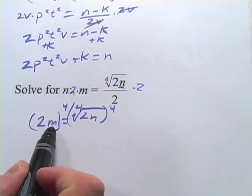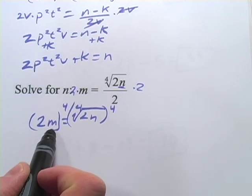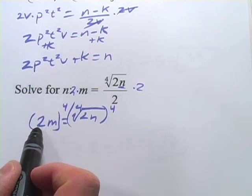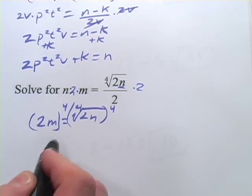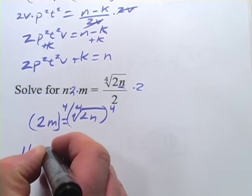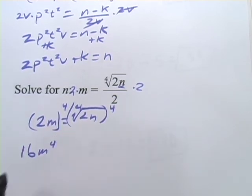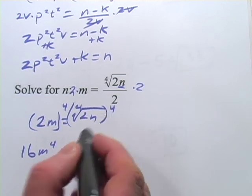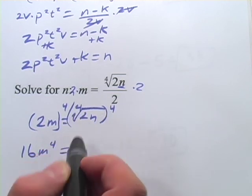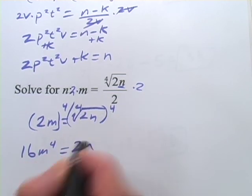Now when I raise 2m to the fourth power, I've got to raise 2 to the fourth power and raise m to the fourth power. 2 to the fourth power is 2 times 2 times 2 times 2. That's 16. m to the fourth power we can write as m to the fourth. And over here we're going to have the fourth power and the fourth root canceling each other out and just a 2n.